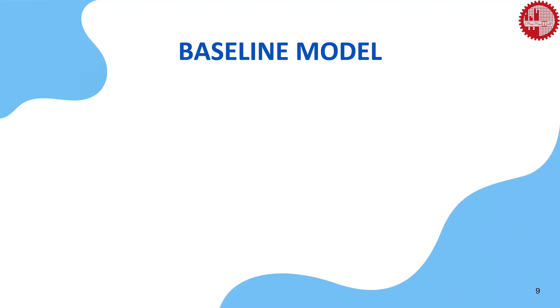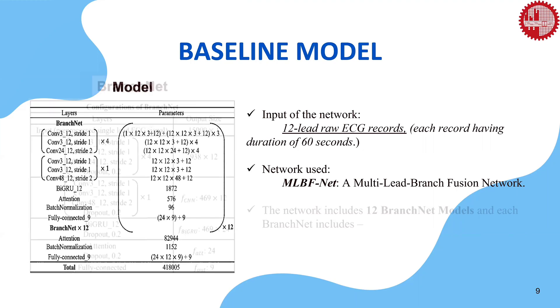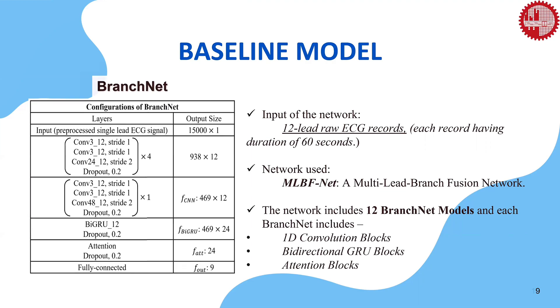There are many existing models proposed by authors on this dataset. We chose one of those existing methods as our baseline model, named Multi-lead Branch Fusion Network, abbreviated as MLBFNet. As to our knowledge, this is the latest model that outperforms all existing systems to classify 8 different arrhythmias. The total number of model parameters is only about 0.42 million. The branch network includes one-dimensional convolutional blocks, bi-directional GRU blocks, and attention blocks.